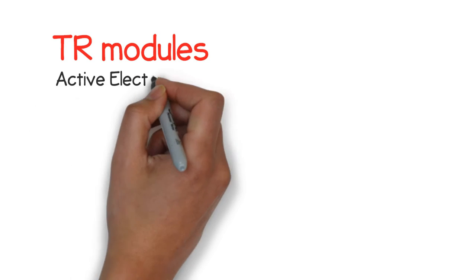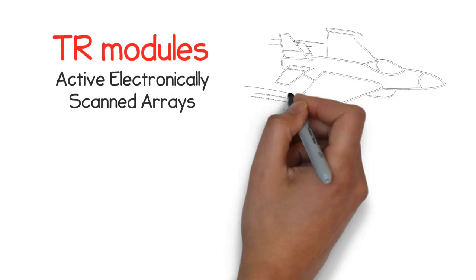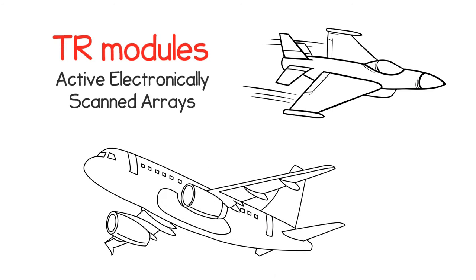TR Modules are the key component enabling active electronically scanned arrays which are being used or planned for use in many military and commercial systems.